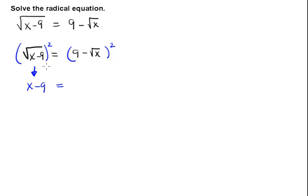When we do that, the left side of the equation just becomes x minus 9 because the square and the square root cancel each other out. They are opposite operations.